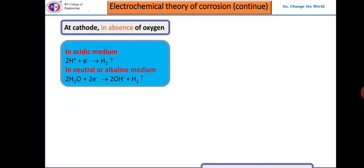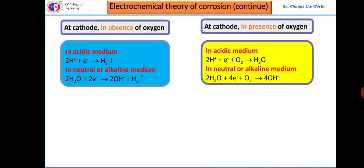Now let us understand hydrogen evolution mechanism at the cathode. Hydrogen gas is released when electrons are absorbed in presence of acidic medium. Similar observations were made when electrons are absorbed in neutral or alkaline medium. In both the cases, hydrogen gas is evolved, hence it is called hydrogen evolution mechanism at the cathode. Let us see the reactions at cathode in presence of oxygen.